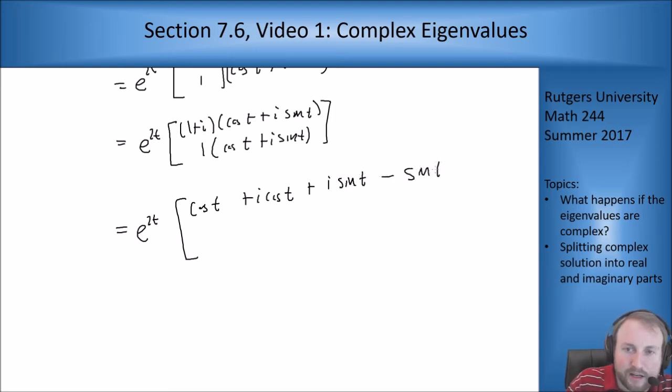cosine t plus i sine t minus sine t where the minus came from an i squared that was sitting in there because i squared is minus 1. At the bottom I get cosine t plus i sine t. And now I can take this and split it into its real and imaginary parts.